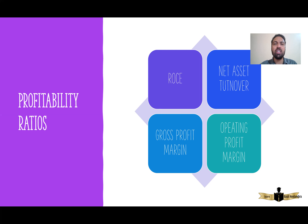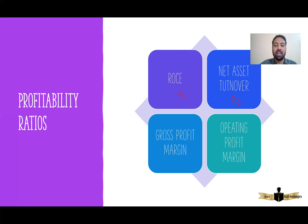The profitability ratios are ROCE, net asset turnover, gross profit margin, and operating margin. This is part two of interpretation of financial statements, where we discuss how to interpret ROCE. In part three, I'll be uploading how to interpret net asset turnover. In part four, I'll explain gross profit margin and operating margin. And in part five, I'll cover how to interpret liquidity ratio and gearing ratio.